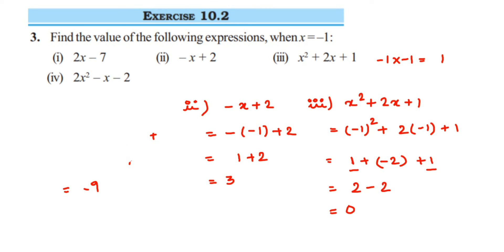The last one, fourth one. So 2x square minus x minus 2. So this is 2 into minus 1 square. Again we have minus sign and the value of x is minus 1, minus 2. So minus 1 square we have done, it is 1.